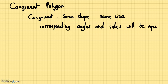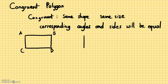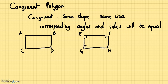What does that mean? So let's say I have a rectangle — rectangle ABCD — and another rectangle that is congruent to that one: rectangle EFGH. Because these are rectangles, all of the angles are going to be right angles. To notate that these two rectangles are the same or are congruent, I say that ABCD is congruent to EFGH.